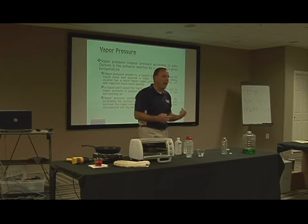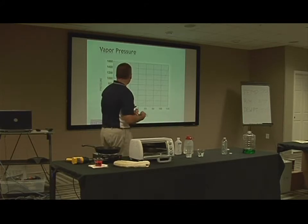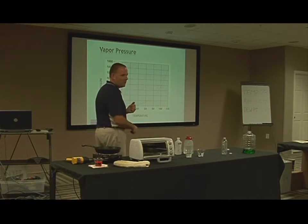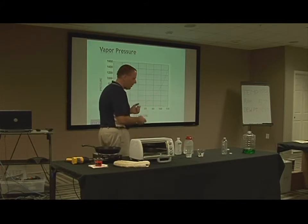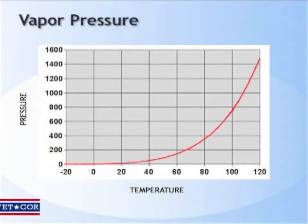So vapor pressure can actually be used to identify one liquid from another. Here's the important thing about vapor pressure as it relates to what we do at Vetcorp. This is a chart of vapor pressure — for those of you that hate the metric system, this is in torr, which is the metric unit of pressure, and this is in degrees centigrade along the bottom, also metric. The actual numbers on this chart don't mean anything. The only thing I want you to take away from this is the shape of the curve: it's an exponential curve.